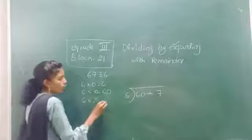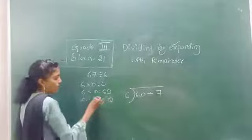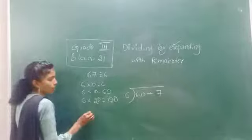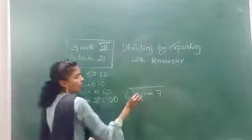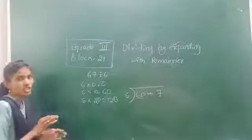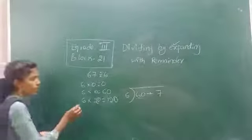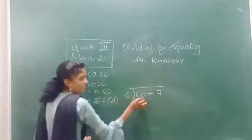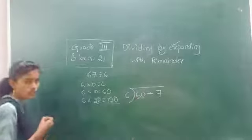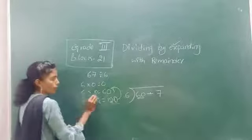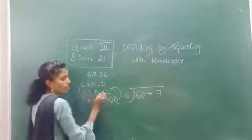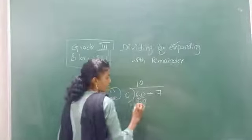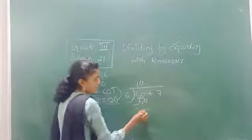6 twos are 12, meaning 6 twenties are 120. Like this, go on until you get a number better than 60. Stop the table. 6 twenties are 120. So 120 is greater than 60. What do you have to do? Go to the number before it. 6 tens are 60. Now subtract: 60 minus 60 is 0.